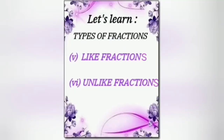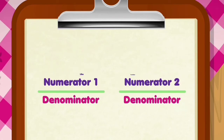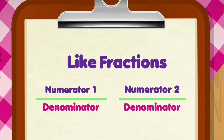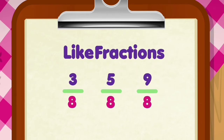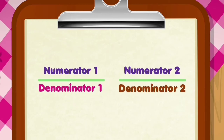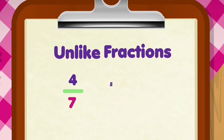Let's learn about the 5th and 6th types of fractions: like and unlike fractions. Fractions with the same denominators are called like fractions. For example, 3 upon 8, 5 upon 8, 9 upon 8. Fractions with different denominators are called unlike fractions. For example, 4 upon 7, 5 upon 9, 1 upon 2.